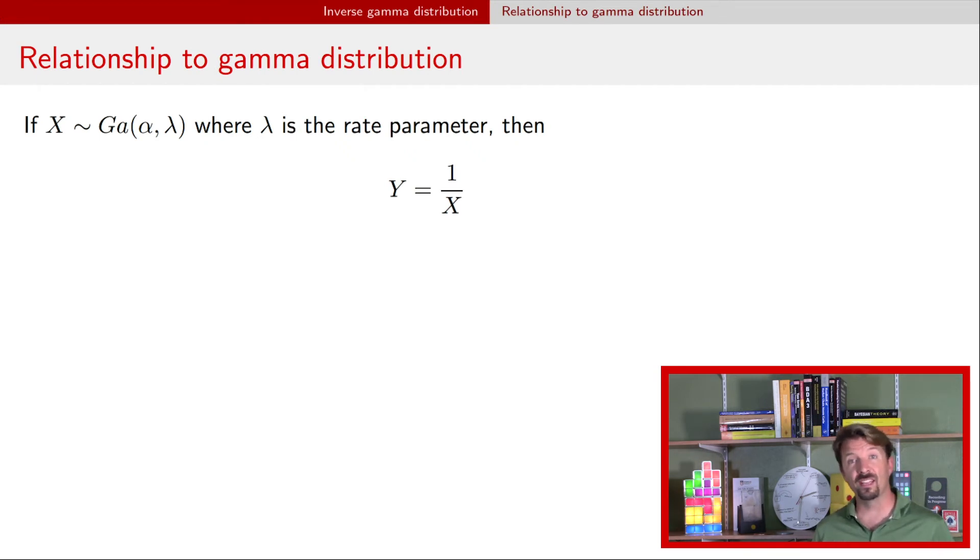Now, I mentioned at the beginning that this is related to the gamma distribution, or that you should go and watch the video for the gamma distribution. And so the way that it's related is that if you have a gamma distribution with a shape parameter alpha and, importantly, a rate parameter lambda, then if you take its inverse or its reciprocal, you'll have an inverse gamma distribution with parameters alpha and gamma, so the shape and now the scale.